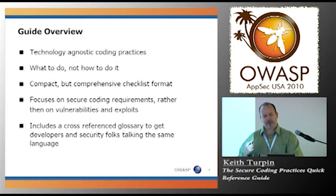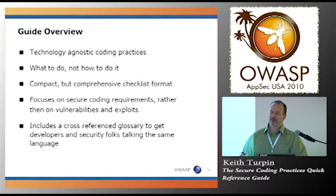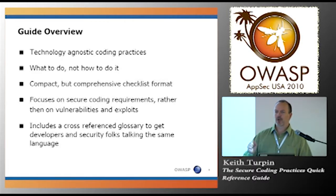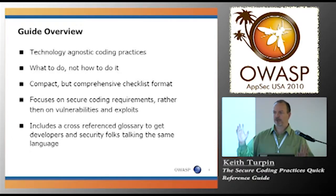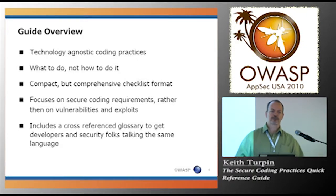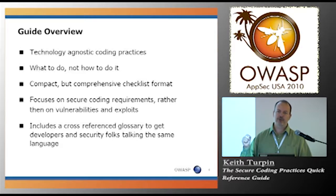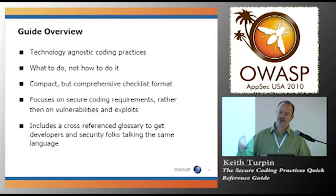The guide operates at a fairly high level. It's technology agnostic, meaning it doesn't tell you specifically if you're writing in Java, ColdFusion, C#, or whatever — it doesn't say 'in C#, do this.' What it does is treat things more like coding requirements. It says these are the tasks you need to accomplish, these are the requirements you need to meet — essentially the secure coding requirements that need to go along with your functional requirements. It doesn't tell you specifically how to do each thing; it just tells you what you need to do.